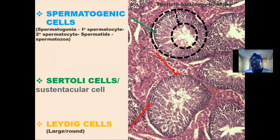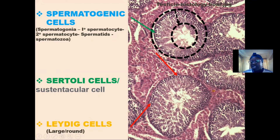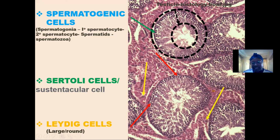The third type of cell is the Leydig cell, or the interstitial cell of Leydig. Each lobe of the testes is made up of seminiferous tubules and interstitial tissue. Outside the seminiferous tubules, we have the interstitial tissue. Within this interstitial tissue is where the Leydig cells are located. This is the Leydig cell, and this is another Leydig cell seen in this region.